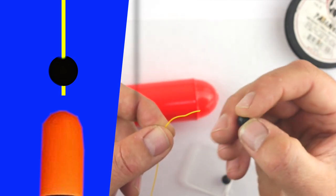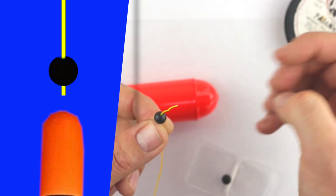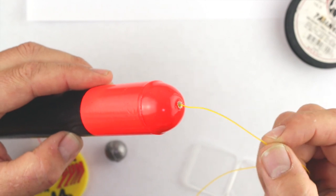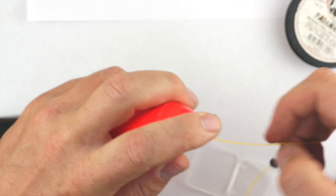So start by bringing your main line off the reel, it will go onto the bead, through the bead, and then it's going to go through the top of the float, which is a red bit here, that's the bit you'll see, and then push that line through.